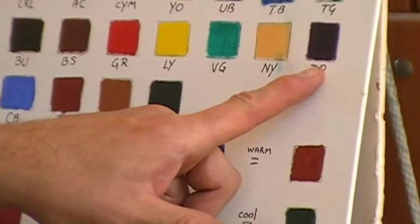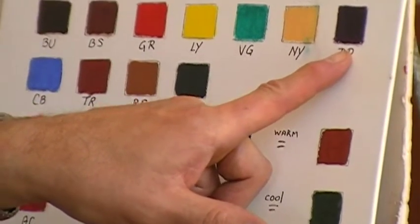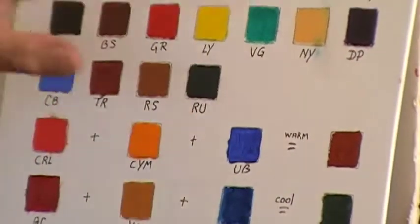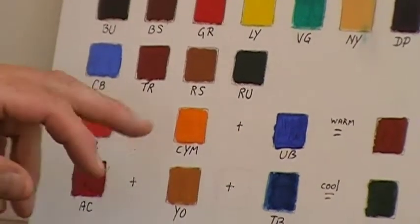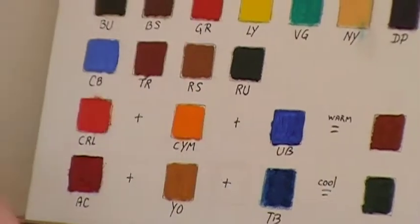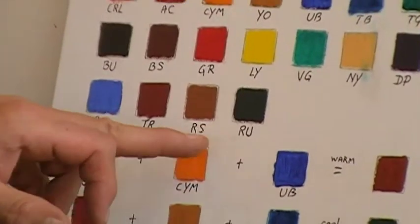This is dioxine purple, I use that occasionally but I'm going to show you how to mix the same color with the primaries. Cobalt blue I rarely use, tiara red I rarely use, raw sienna I can actually mix from yellow ochre and burnt sienna.